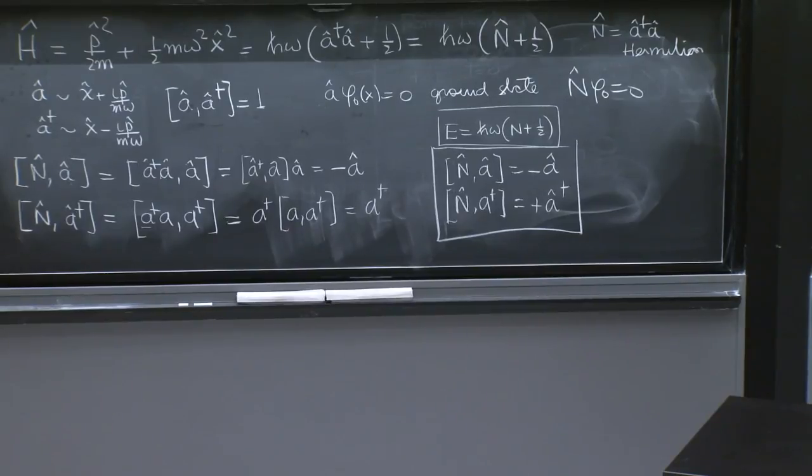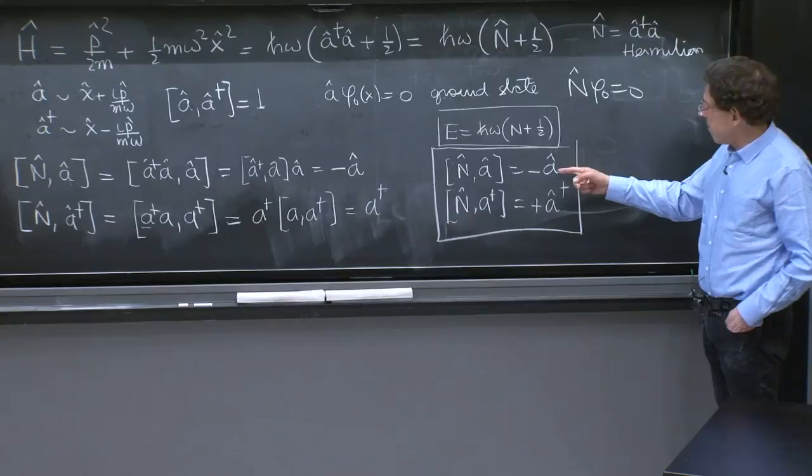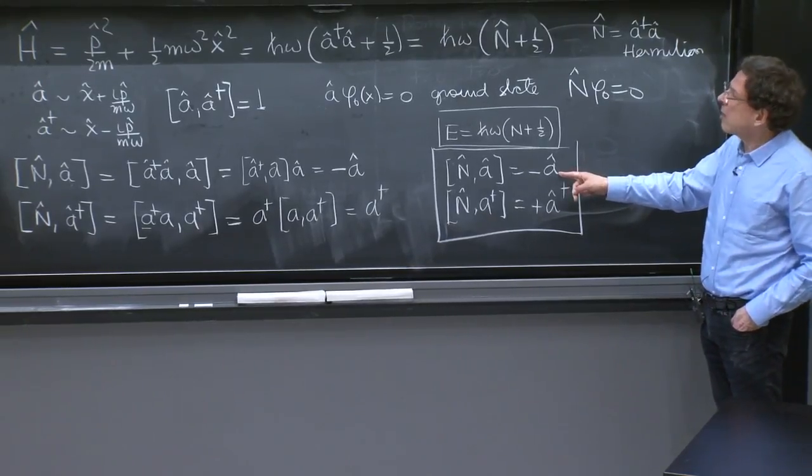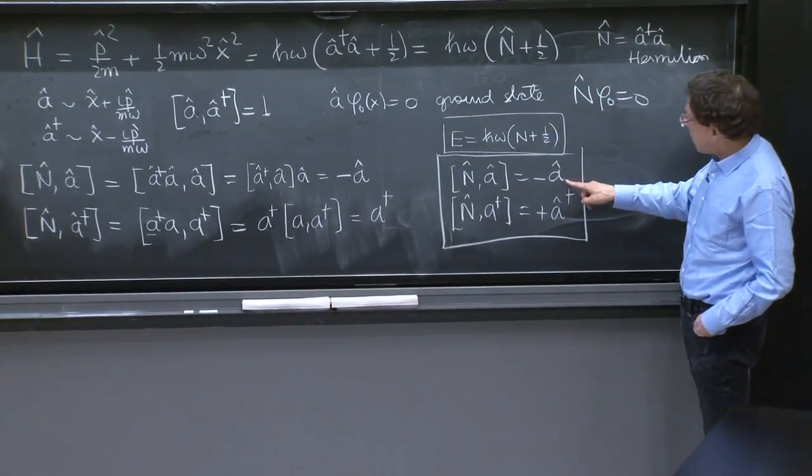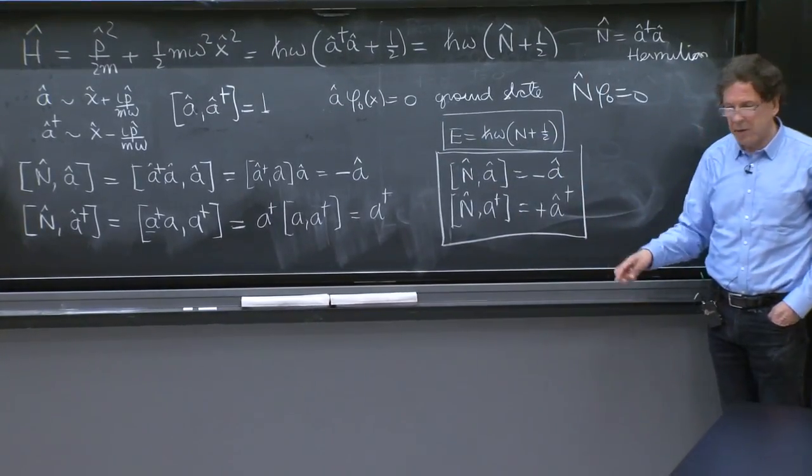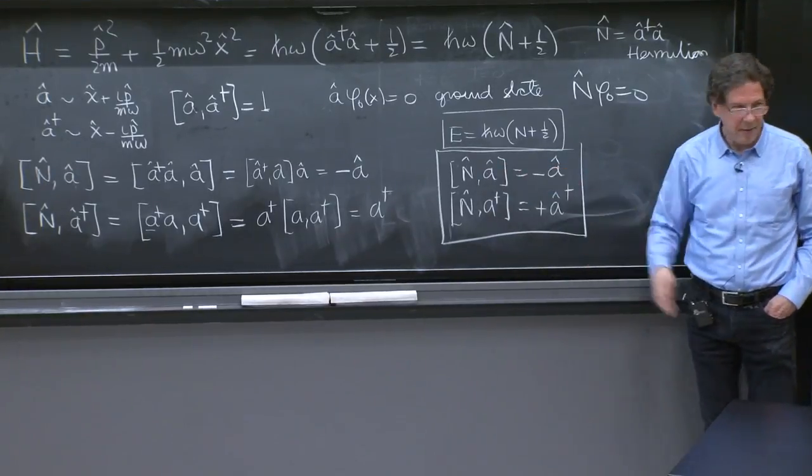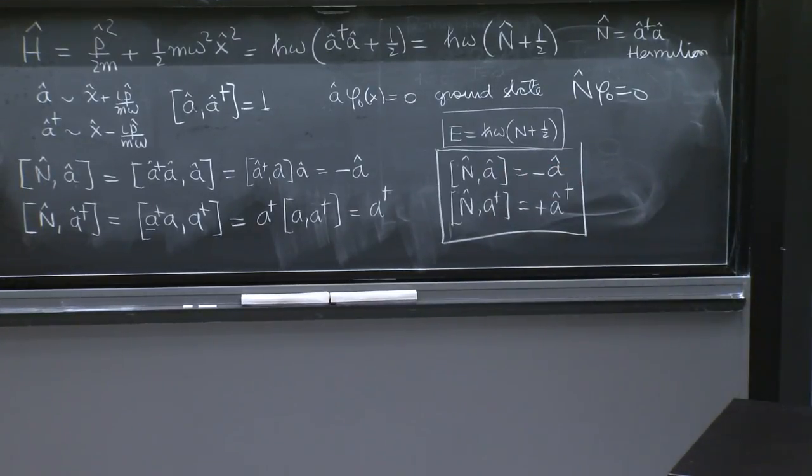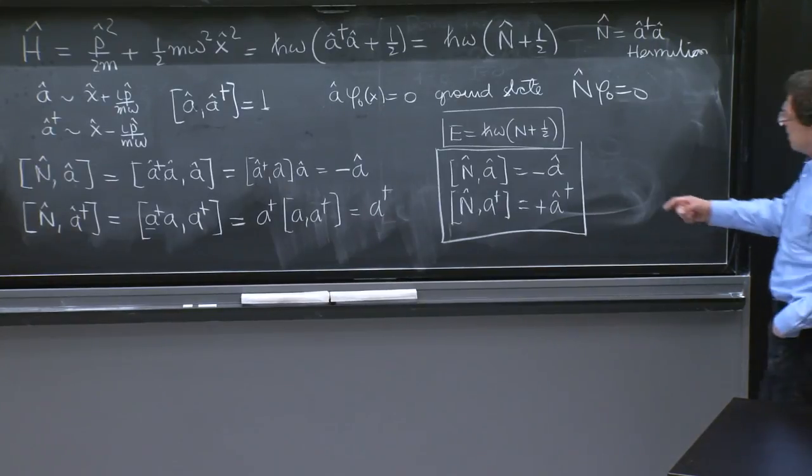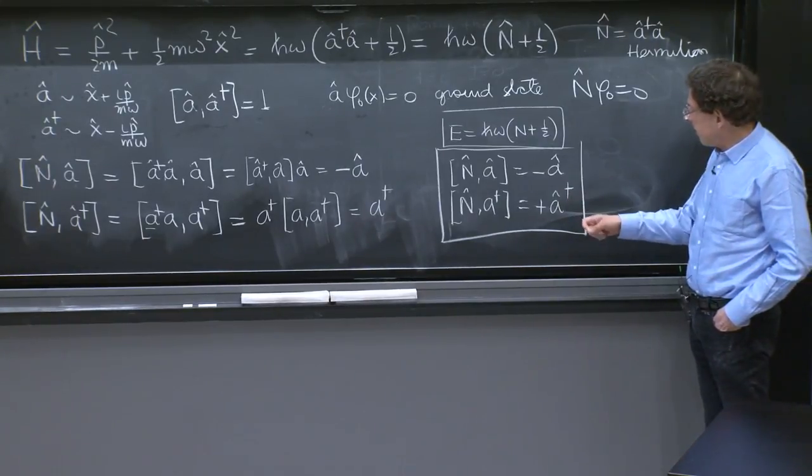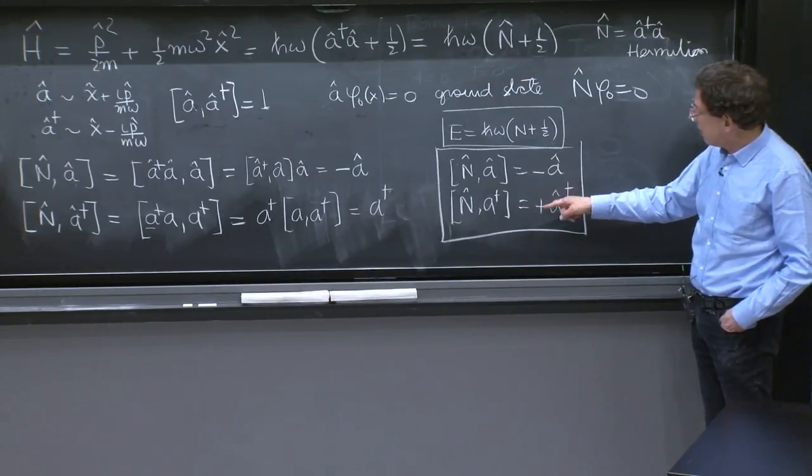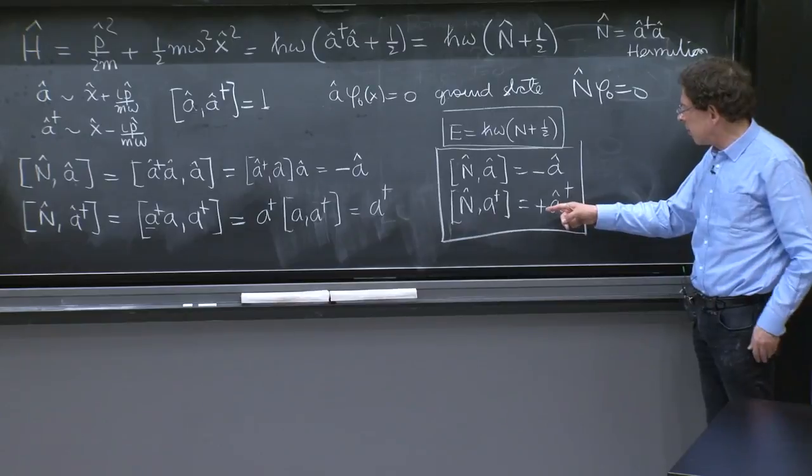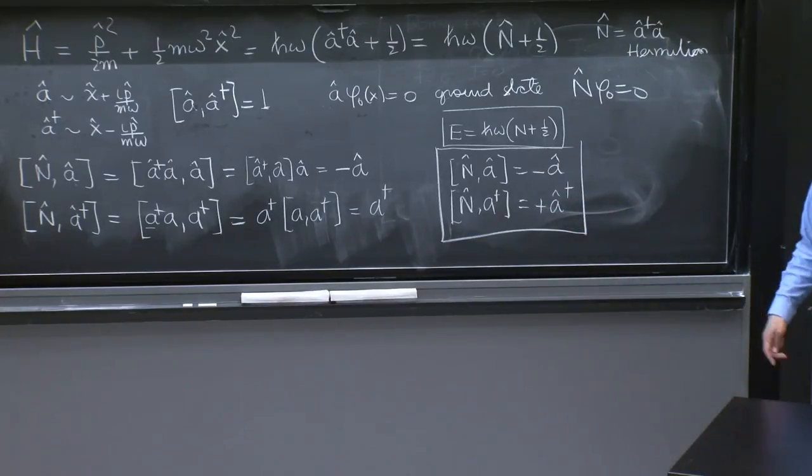This is part of the reason, as we will see soon, that the name of a, which we call destruction operator, because it destroys the vacuum, it's sometimes called lowering operator, because it comes with a negative sign here. And we'll see a better reason for that name. This a dagger is sometimes called the creation operator, or the raising operator, because it increases some number, as you will see. And here, it's reflected by this plus.